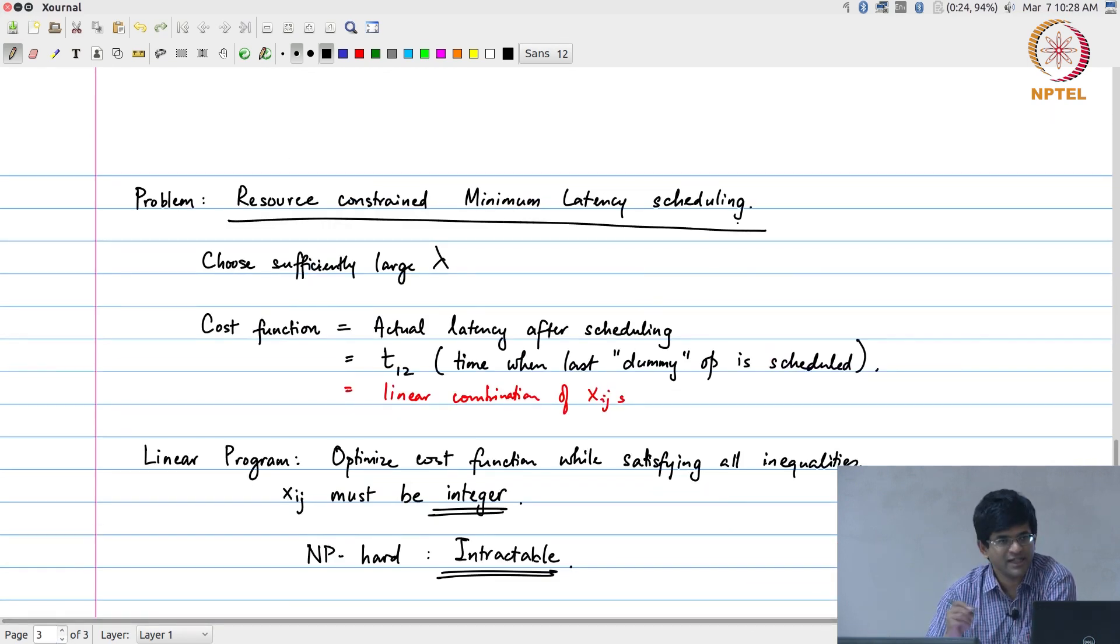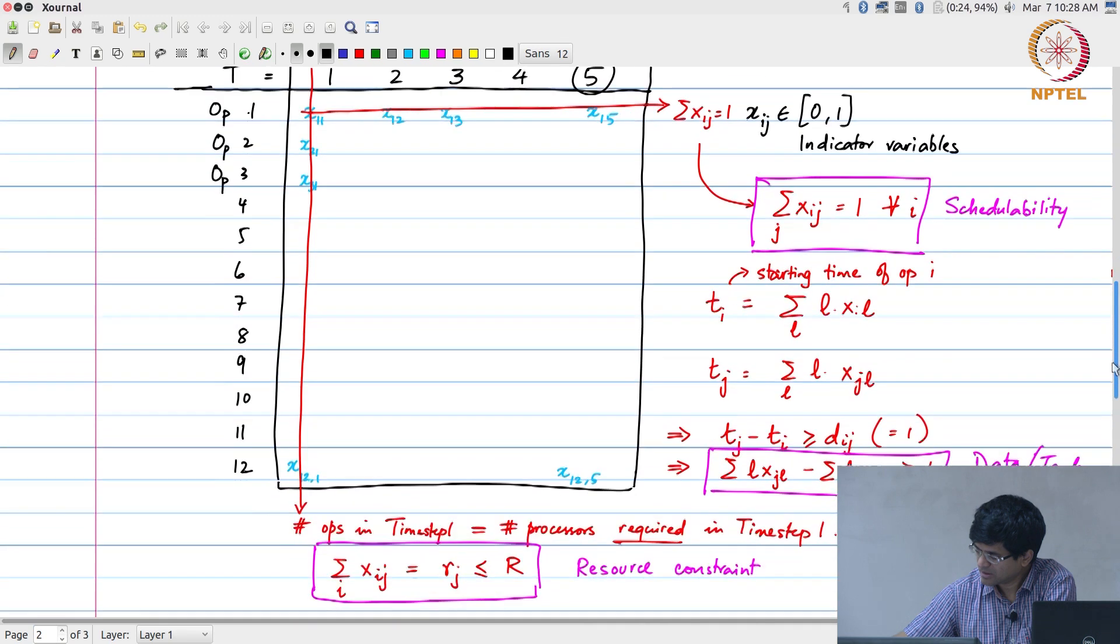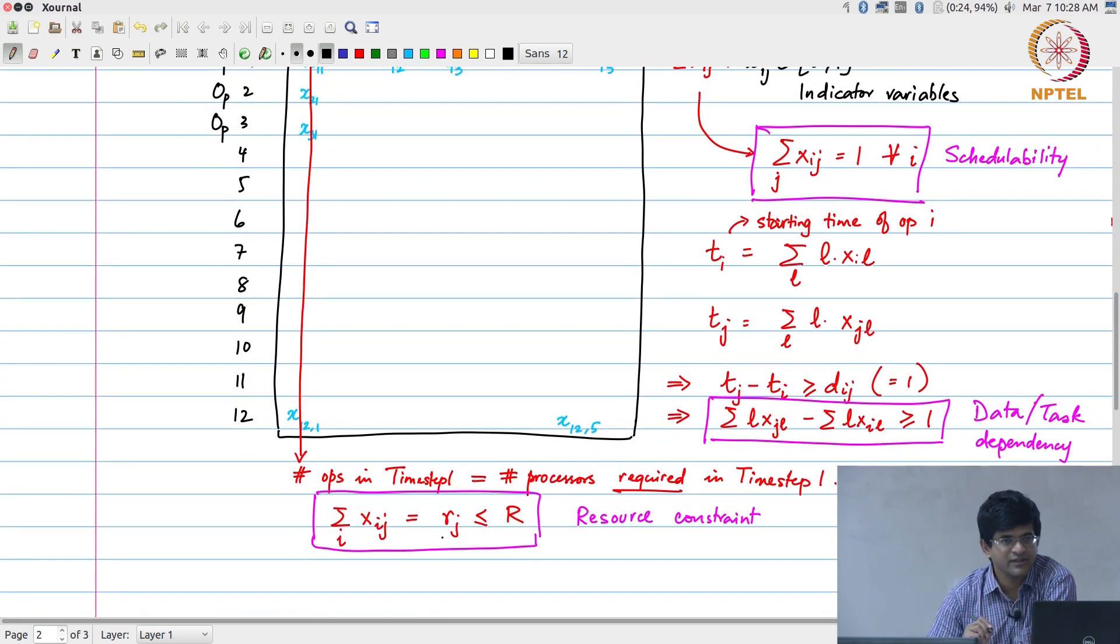There is a dual problem of that which is latency constraint minimum resource. Over there what I would do is my cost function, rather than saying I want to minimize the latency, would actually say I want to minimize the maximum R j that I get at any given point in time.